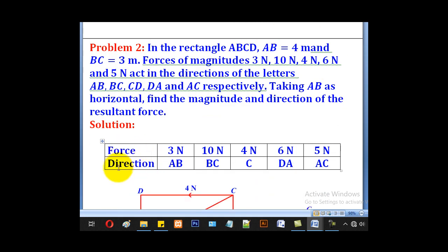We shall go to another problem which involves a rectangle. Here we're given a rectangle ABCD, AB is 4 meters, BC is 3 meters, and forces of magnitude 3, 10, 4, 6, and 5 N act in the direction of the letters AB, BC, CD, DA, and AC respectively. Taking AB as horizontal, find the magnitude and direction of the resultant force. Like we have done previously, we have to first state the force and the direction for all.